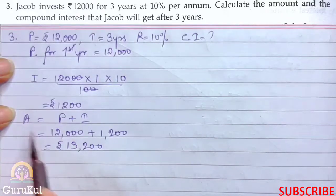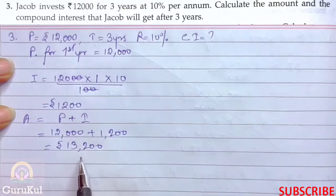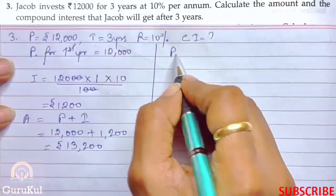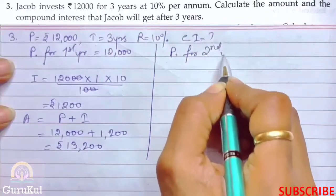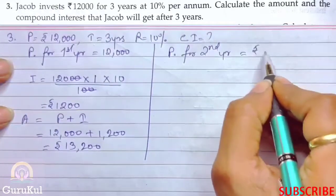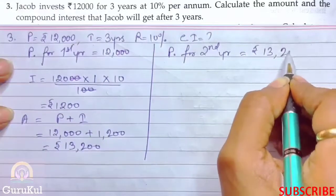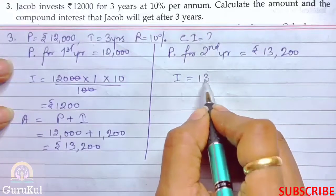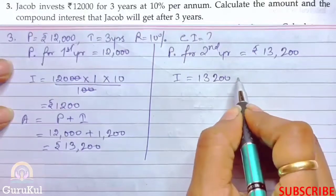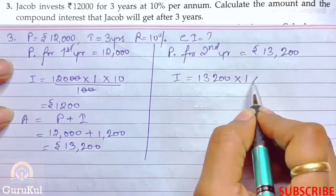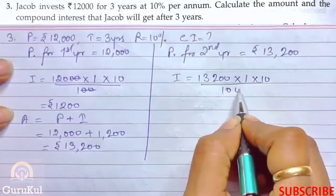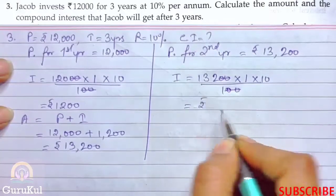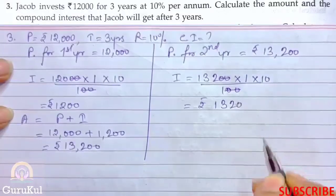Now the amount at the end of first year becomes the principal for the next year. So principle for second year is ₹13,200. Now we calculate interest: 13,200 into time 1 year into rate 10 by 100. Equal number of zeros got cancelled. So our interest is ₹1320.